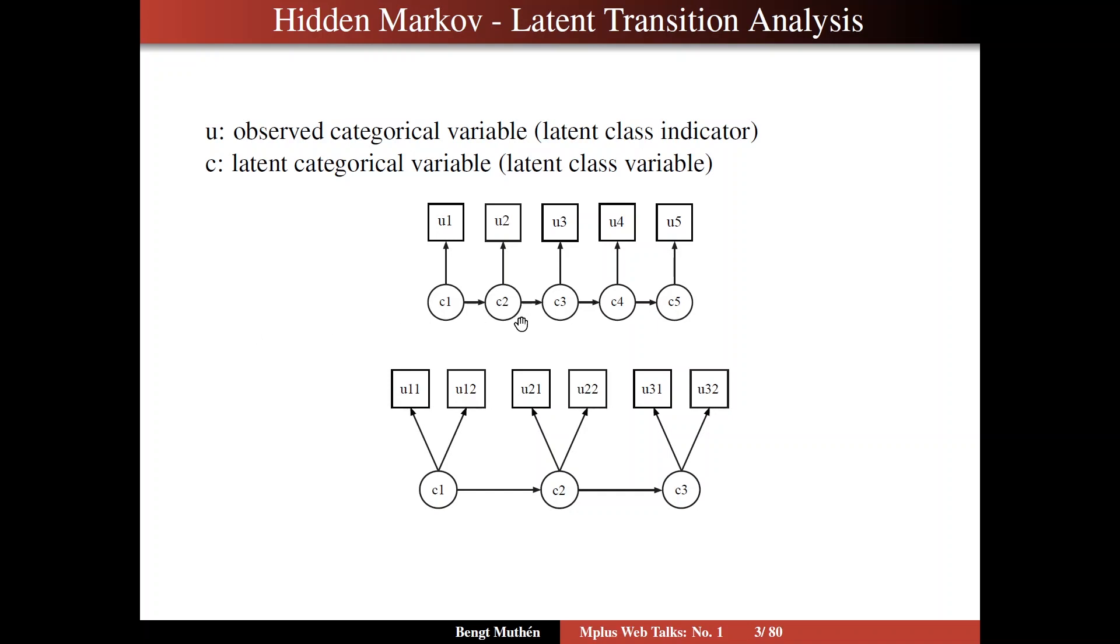At the top, we have a hidden Markov model for five time points. At the bottom, we have a latent transition model for three time points. The boxes are the observed variables, denoted by U. We are going to take them to be categorical variables, typically binary or ordinal variables, although nominal variables, count variables or continuous variables are possible as well.